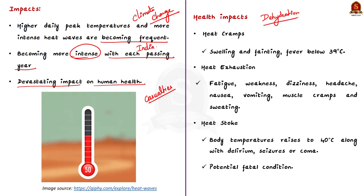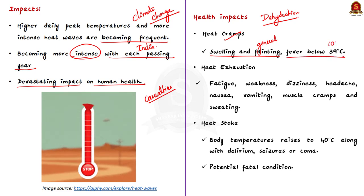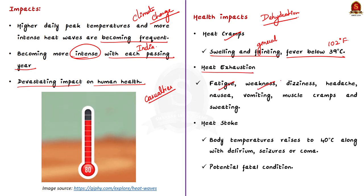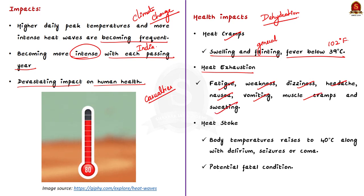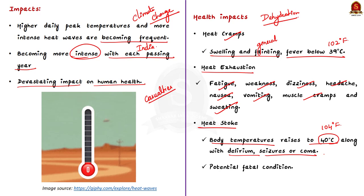Let's briefly see the signs and symptoms. The first sign is heat cramp — swelling and fainting will generally be accompanied by fever below 39 degrees Celsius. The next one is heat exhaustion, which includes fatigue, weakness, dizziness, headache, nausea, vomiting, muscle cramps and sweating. Then comes heat stroke — here the body temperature rises to 40 degrees Celsius or more, accompanied by delirium, seizures or coma. This is a potentially fatal condition.